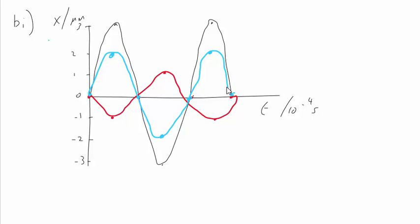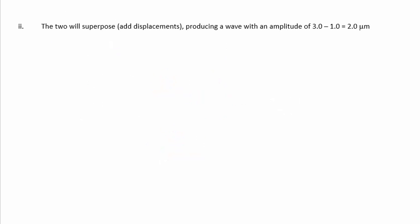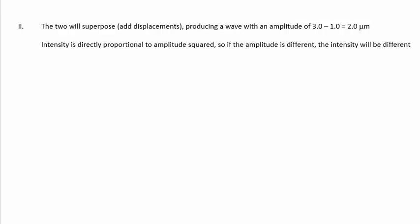In part 2, we're to explain why the intensity at P, due to both sounds, is not the same as the intensity from only L1. Well, the two will superpose, as I've just shown, where the displacements add. This produces a wave with an amplitude of 2 micrometers. Intensity is directly proportional to the square of amplitude, so if the amplitude is different, so is the intensity.